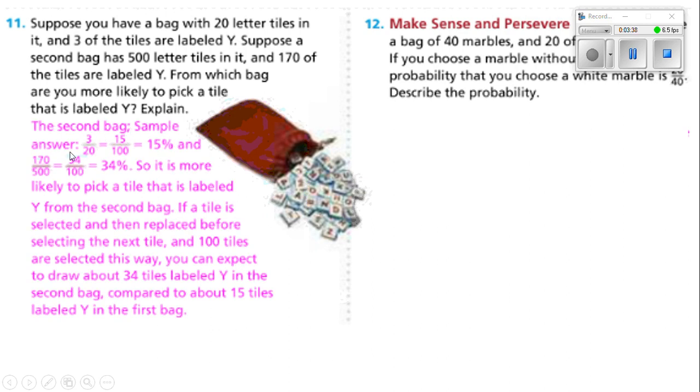The second bag. Three out of 20 is equal to 15 out of 100. Remember, we can take 20 and times it by 5 to get 100, but then we have to multiply 3 by 5 as well. So, 5 times 3 would be 15. 15 over 100 is 15%. And 170 over 500, well, we have to take 500 and divide it by 5 to get 100. So, we would take 170 and divide it by 5 as well, and that would give me 34. So, that's a 34% chance. So, it is more likely to pick a tile that is labeled Y from the second bag. If a tile is selected and then replaced before selecting the next tile, and 100 tiles are selected this way, you can expect to draw about 34 tiles labeled Y in the second bag compared to 15 tiles labeled Y in the first bag.